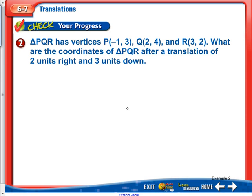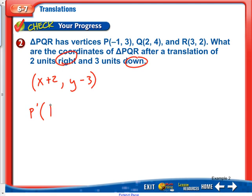Triangle PQR has vertices negative 1 comma 3, 2 comma 4, and 3 comma 2. What are the coordinates after a translation of 2 units right and 3 units down? The rule is X plus 2 and Y minus 3. For P prime: negative 1 plus 2 is 1, and 3 minus 3 is 0. So P prime is at 1 comma 0.